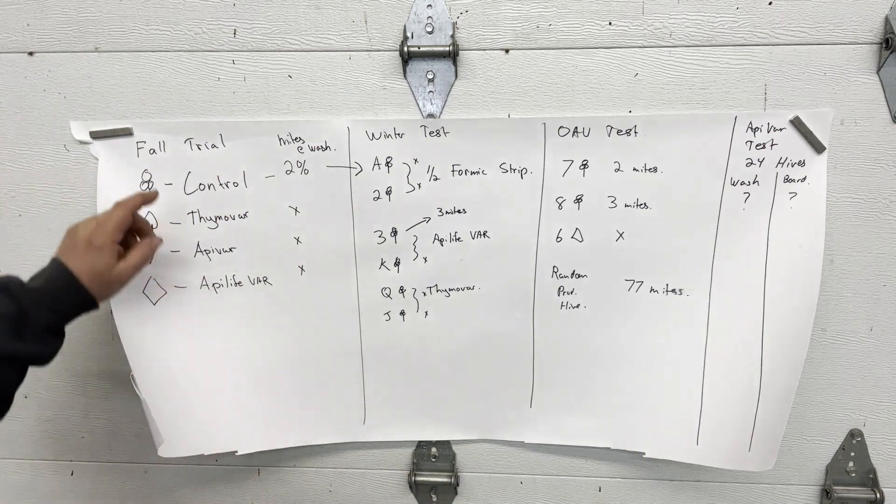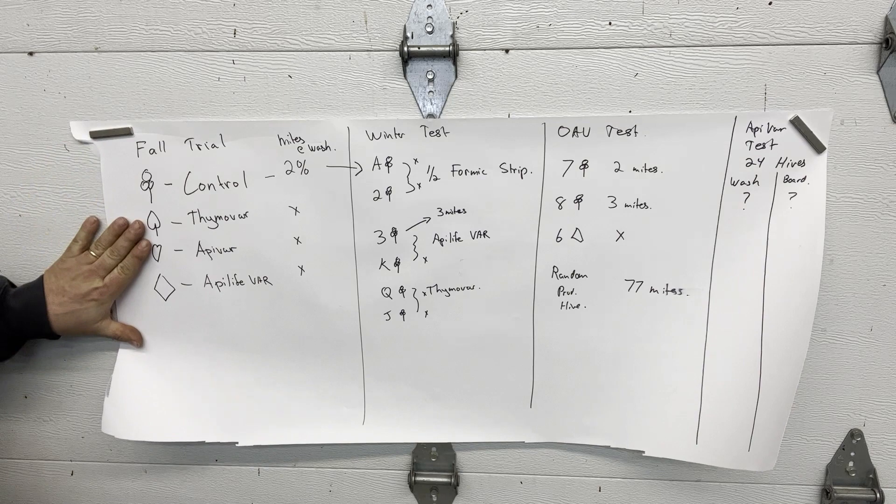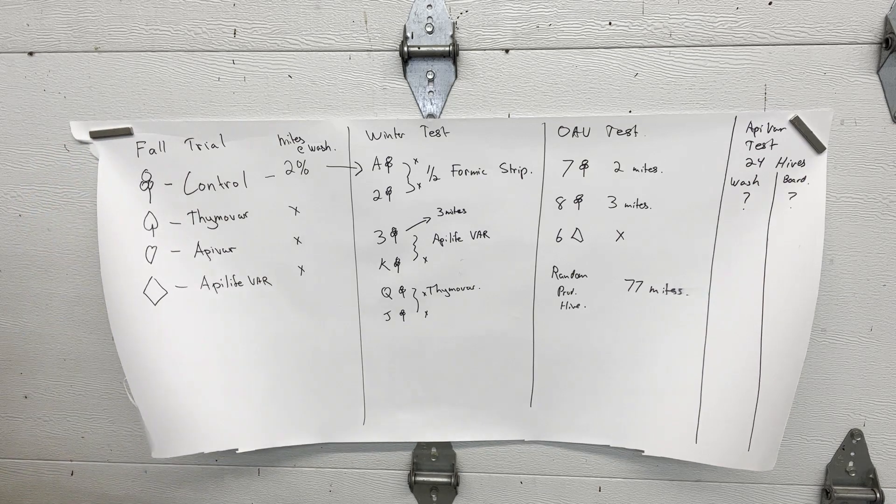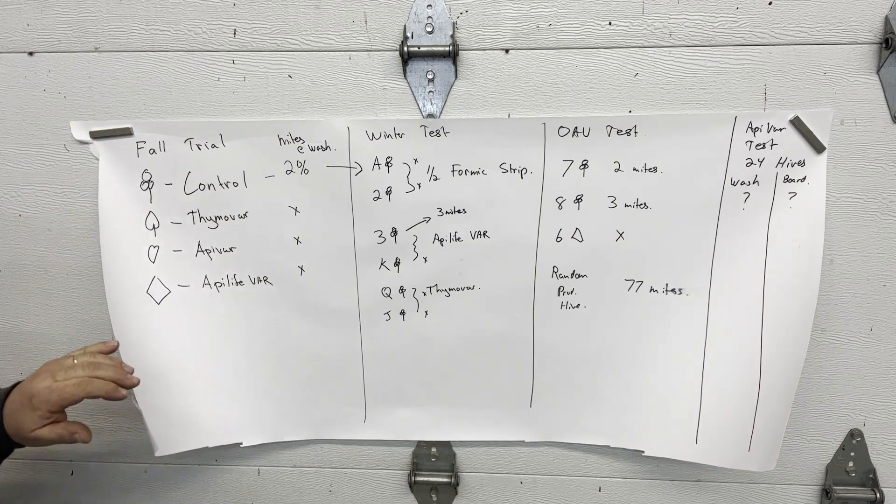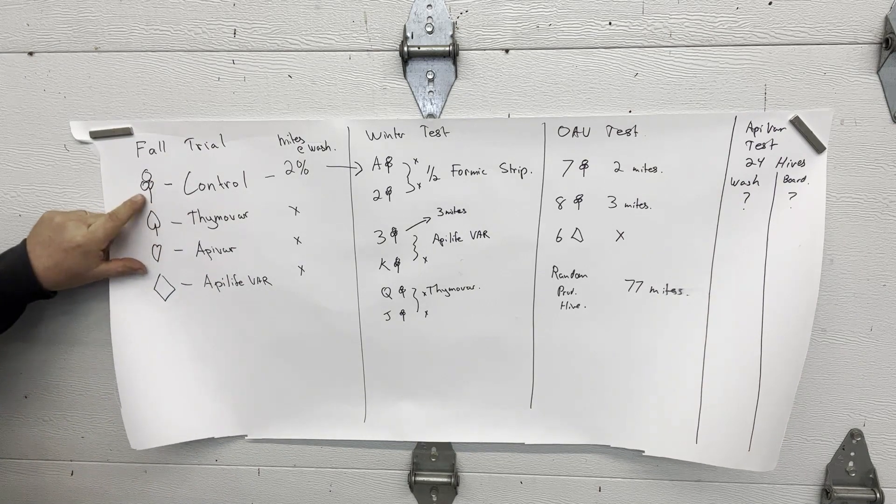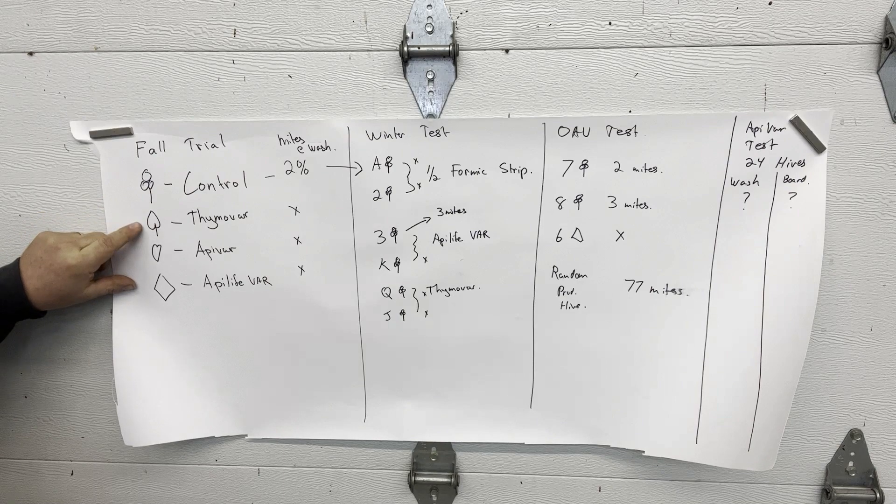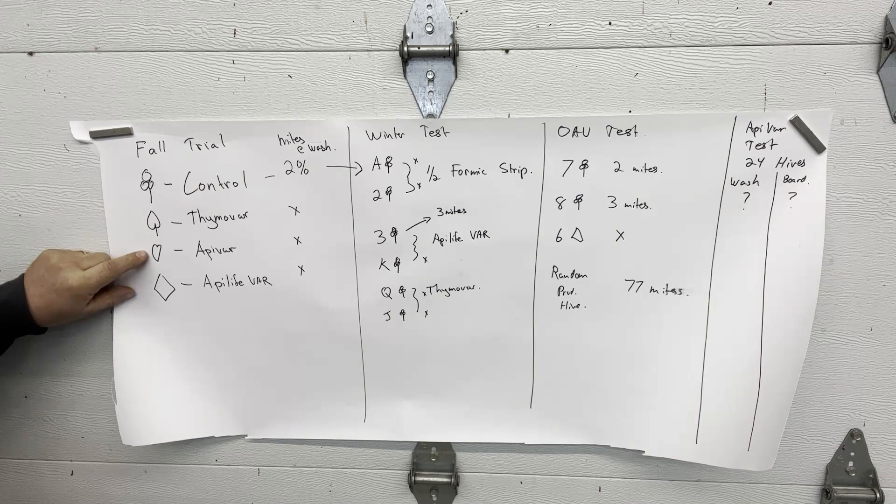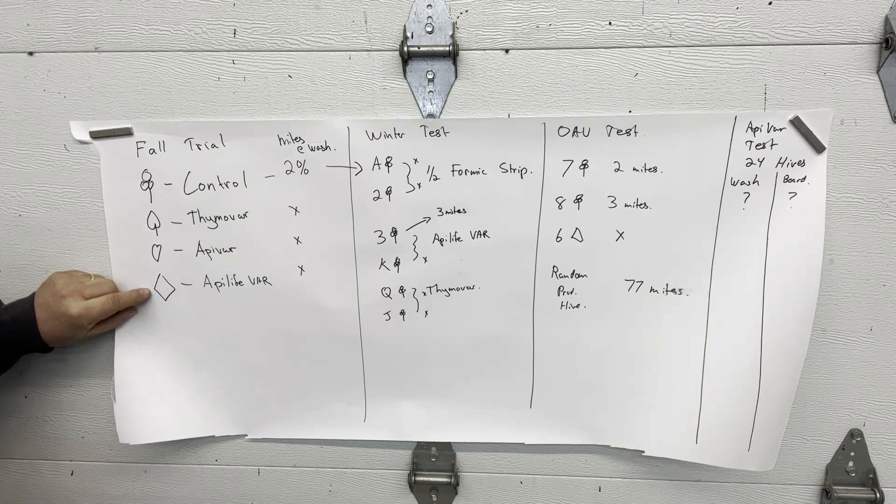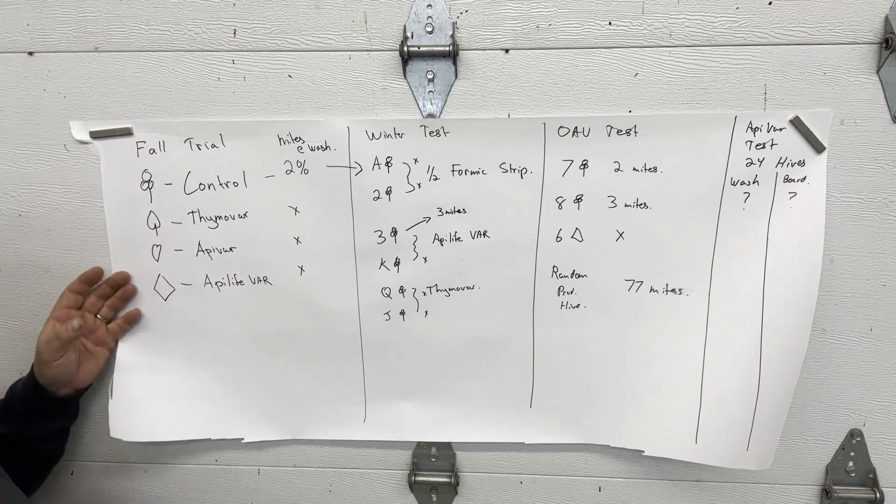In the fall I did a trial. I had a deck of cards and I randomly assigned those cards to hives in a bee yard and I applied either no treatment to clubs, to spades I gave a thymavar treatment, hearts got apovar and diamonds got apolite var.